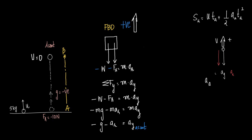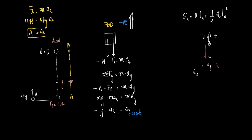So the acceleration in the Y direction during the ascent is: AY = minus G minus AR = minus 10 minus 2 = minus 12 m/s². Therefore, AY during ascent equals minus 12 m/s².